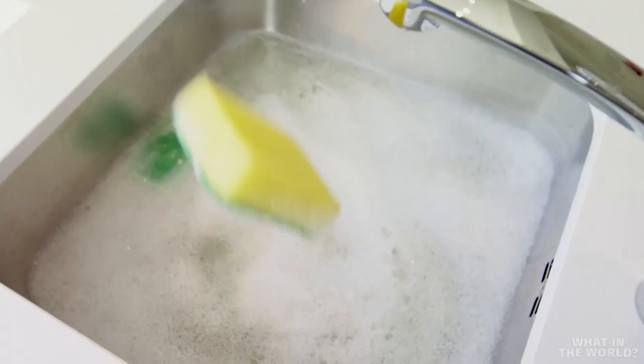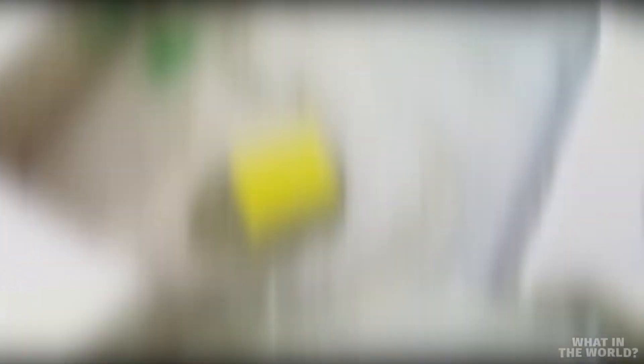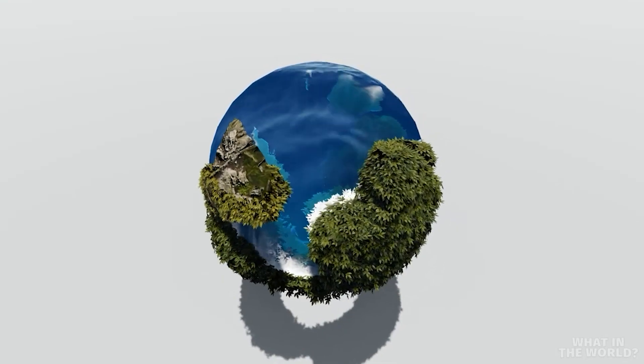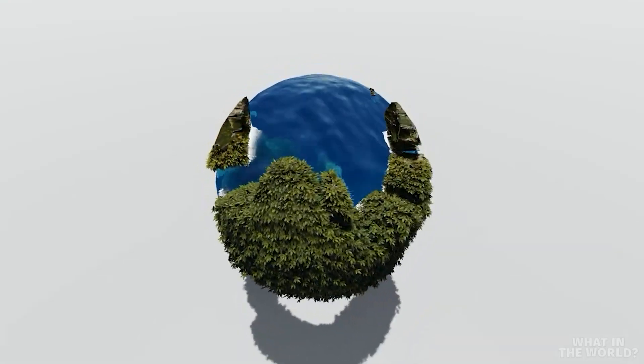The ringwoodite is like a sponge soaking up the water. There is something very special about the crystal structure of ringwoodite that allows it to attract hydrogen and trap water. This mineral can contain a lot of water under conditions of the deep mantle.